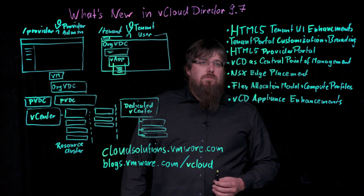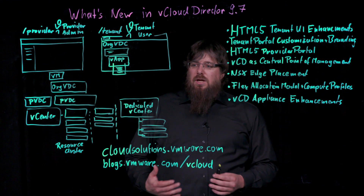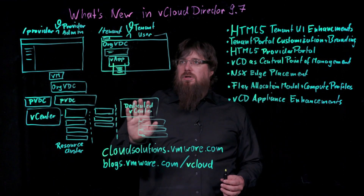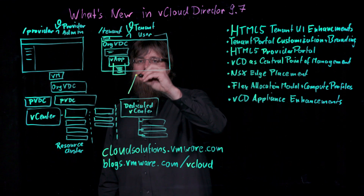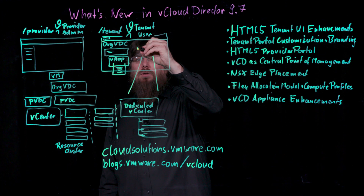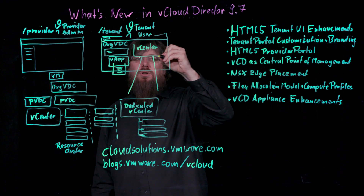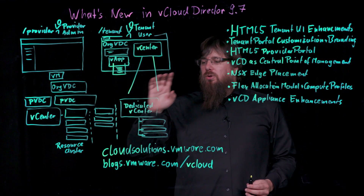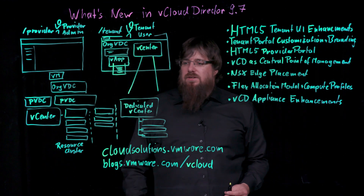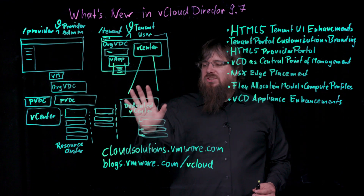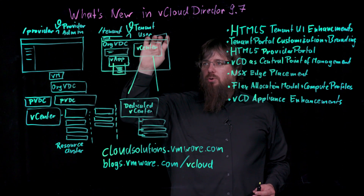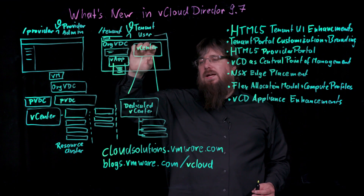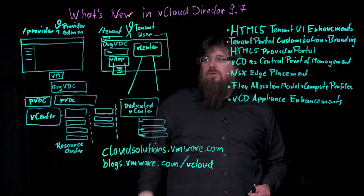With vCloud Director 9.7, we also introduce vCloud Director as a central point of management. This allows you, as a service provider, to register dedicated vCenter servers that you offer on a per-tenant basis into the vCloud Director UI, so that a tenant can access the vCenter through the vCloud Director tenant UI without the need to log in directly or to create a specific VPN configuration. vCloud Director provides a proxy through the vCenter API, and the tenant user can use either the vSphere client or the API of that dedicated vCenter through the vCloud Director endpoint.